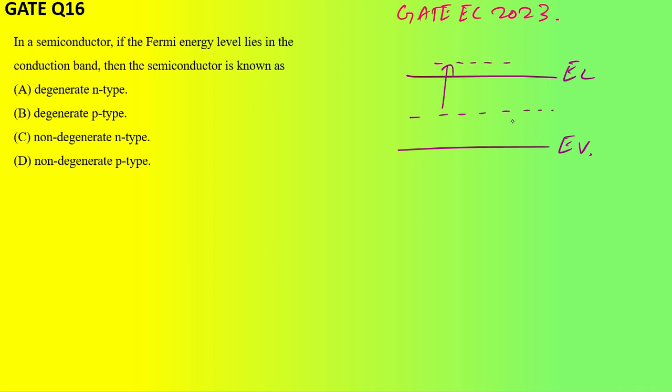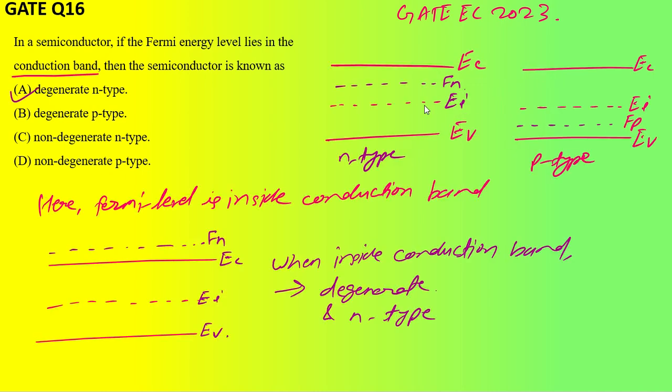What I have done is I have given you the Fermi level diagram for n-type. What happens in n-type? The electrons are more, right? So the Fermi energy level moves towards the conduction band.